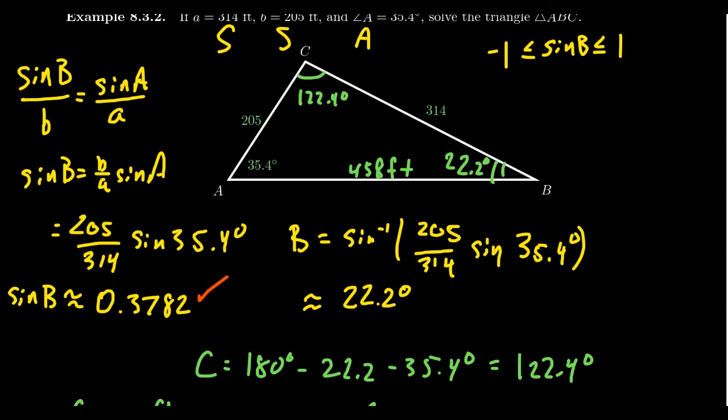This is a very important step. It's important to remember that if you take sine of B, this is actually equal to sine of 180 degrees minus B. That is to say, the sine function cannot tell the difference between an angle and its supplement.